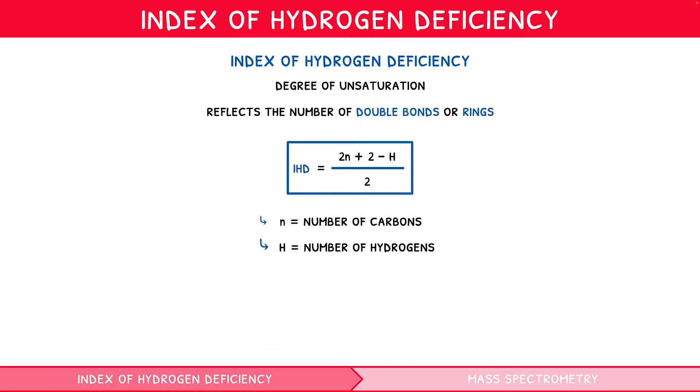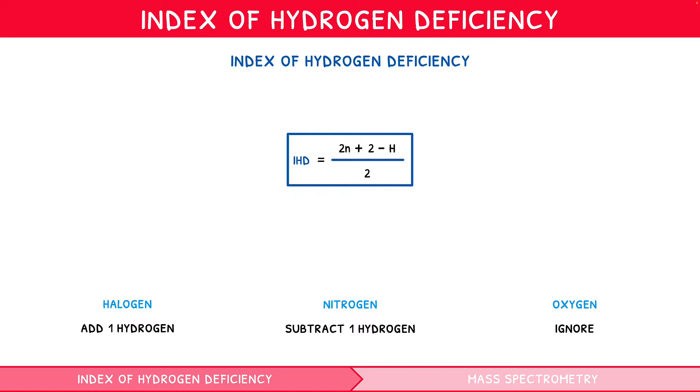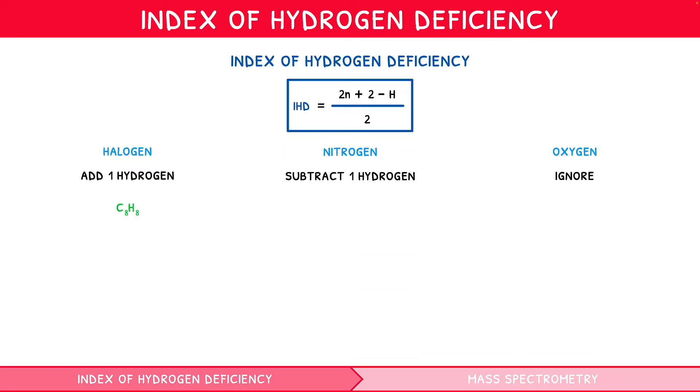When using the formula, each halogen adds 1 to the hydrogen number, each nitrogen subtracts 1, and oxygens are ignored. Let's calculate the IHD for some examples to put this into context: C8H8, C5H10OBr2, and C5H7OCl2N.